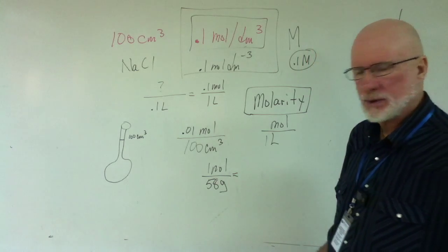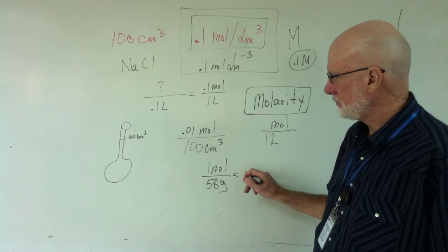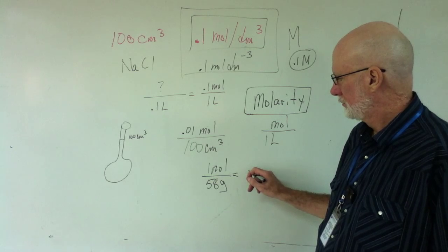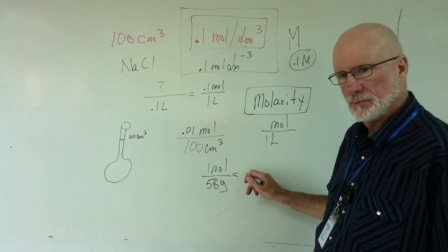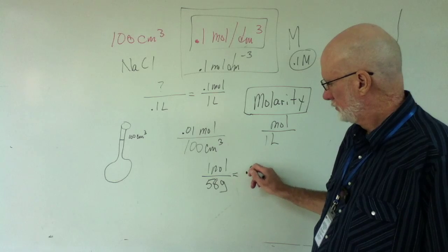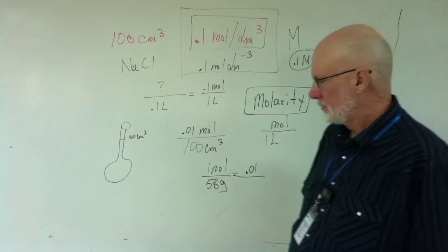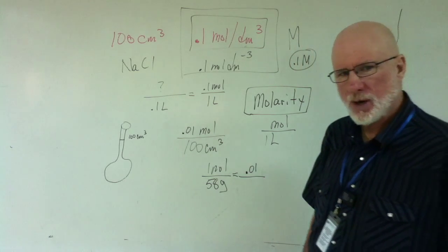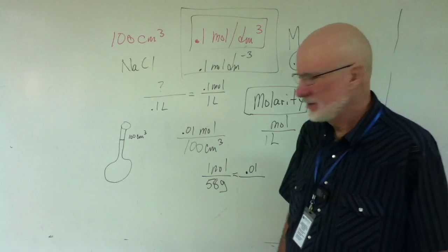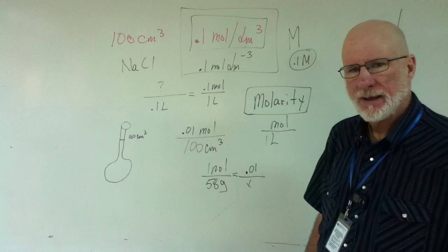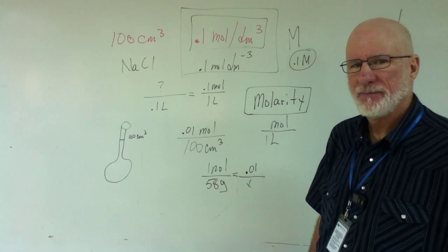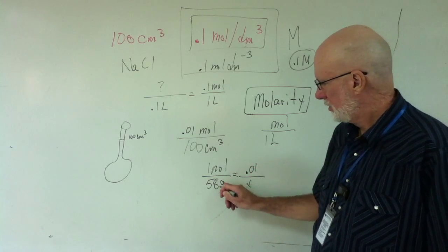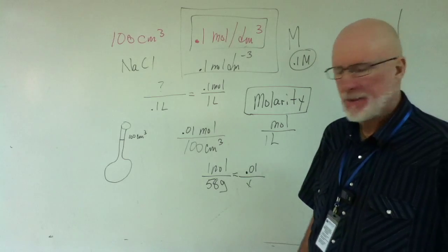So what's that going to be? 0.01 times 58 divided by 1. How many grams is that? 0.58. 0.58 grams. Move it over two places. 0.58.